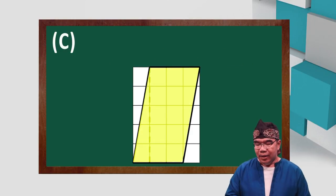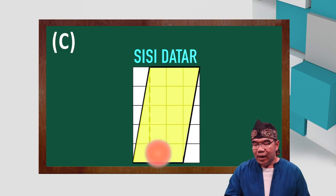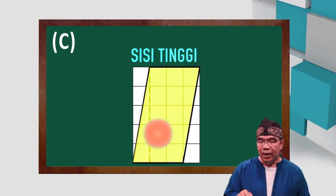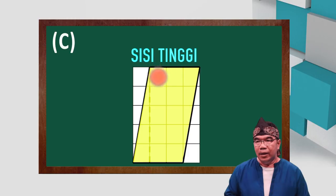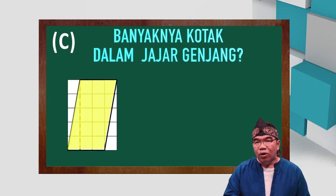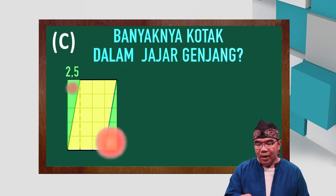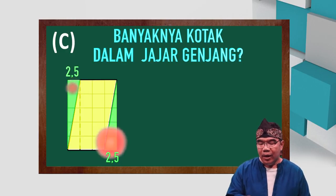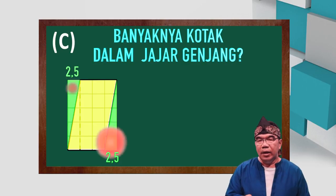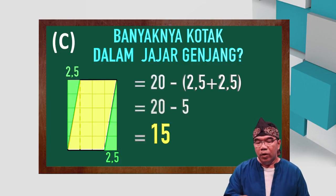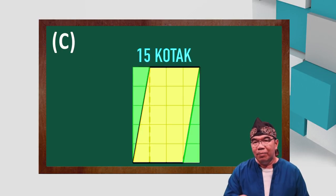Perhatikan yang C. Sisi datarnya 3 dan tingginya 5. Berarti di sini, banyaknya kotak yang ada dalam jajar genjang C adalah: perhatikan, di sini segitiga luasnya 2,5 dan di sini pun 2,5. Berarti, banyaknya kotak yang ada di sini adalah 20 dikurangi 2,5 dikurangi 2,5, atau sama dengan 15.